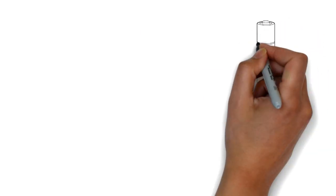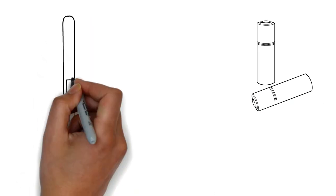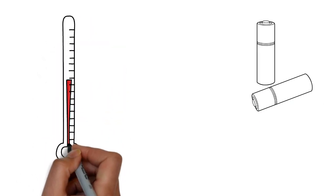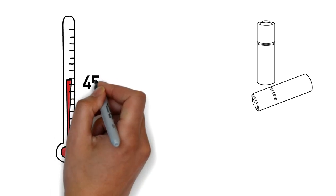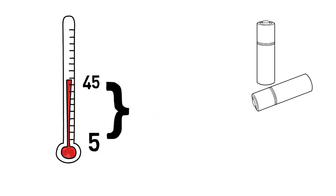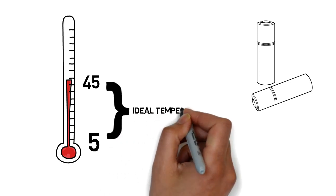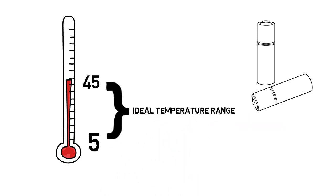It should be noted that batteries cannot charge when the cell temperature goes beyond the range of 0 to 45 degrees centigrade. When the battery is too cold or too hot, charging leads to excessive heat generation that has the potential to permanently damage the cells. Therefore, an active cooling system is always beneficial and allows the car to cope with high ambient temperatures.